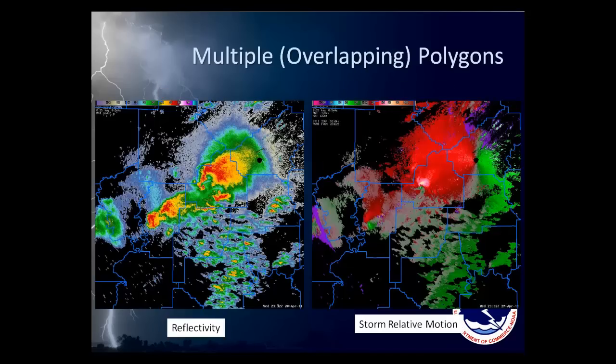Two of the main products used by National Weather Service warning forecasters are radar reflectivity, shown on the left, which depicts two supercell tornadoes — one clearly defined by a hook echo — and velocity, or motions within storms, shown on the right. The green colors are motions toward the radar and red colors are motions away from the radar. You can see the bright greens and reds together indicating a very strong and tight circulation. However, as described in Section 1, Doppler radar does NOT detect actual tornadoes, but circulations that are either associated with tornadoes or could eventually become tornadoes.